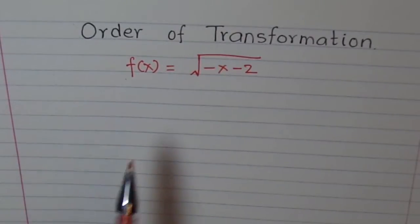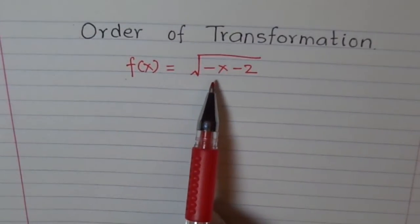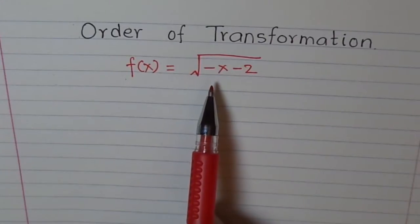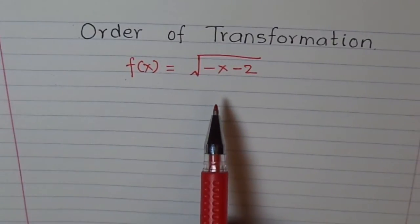Second important thing is that we should factor common factors from x. The coefficient of x should always be 1 and not 2, 3, minus or whatever. Let's see how it really affects.